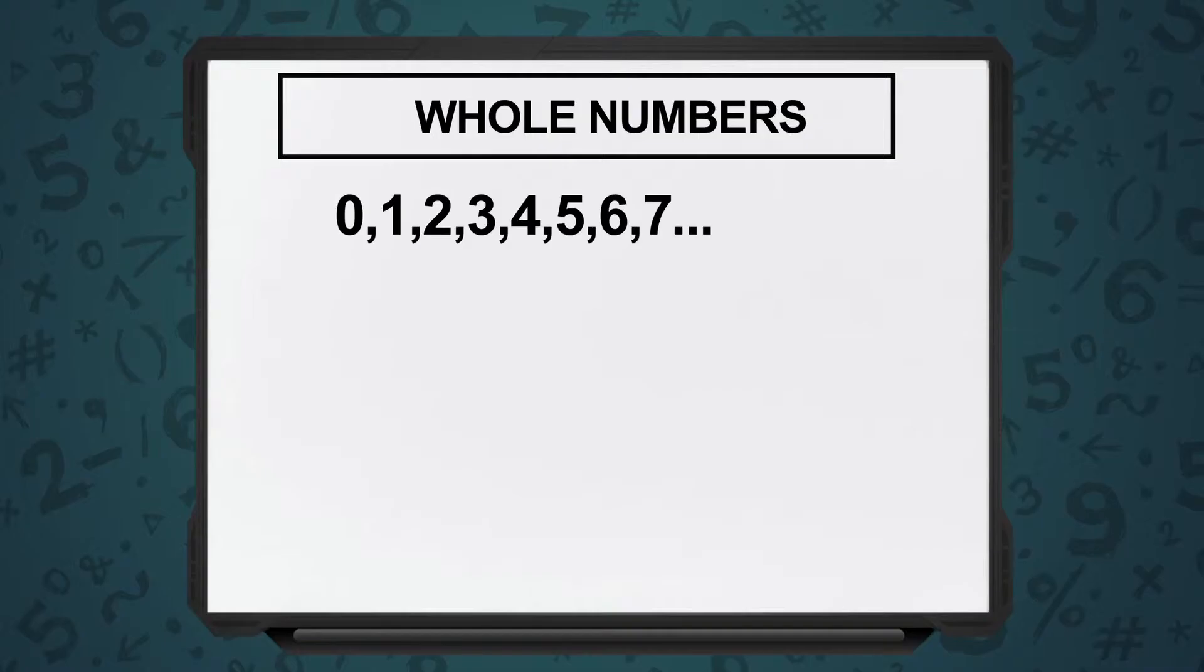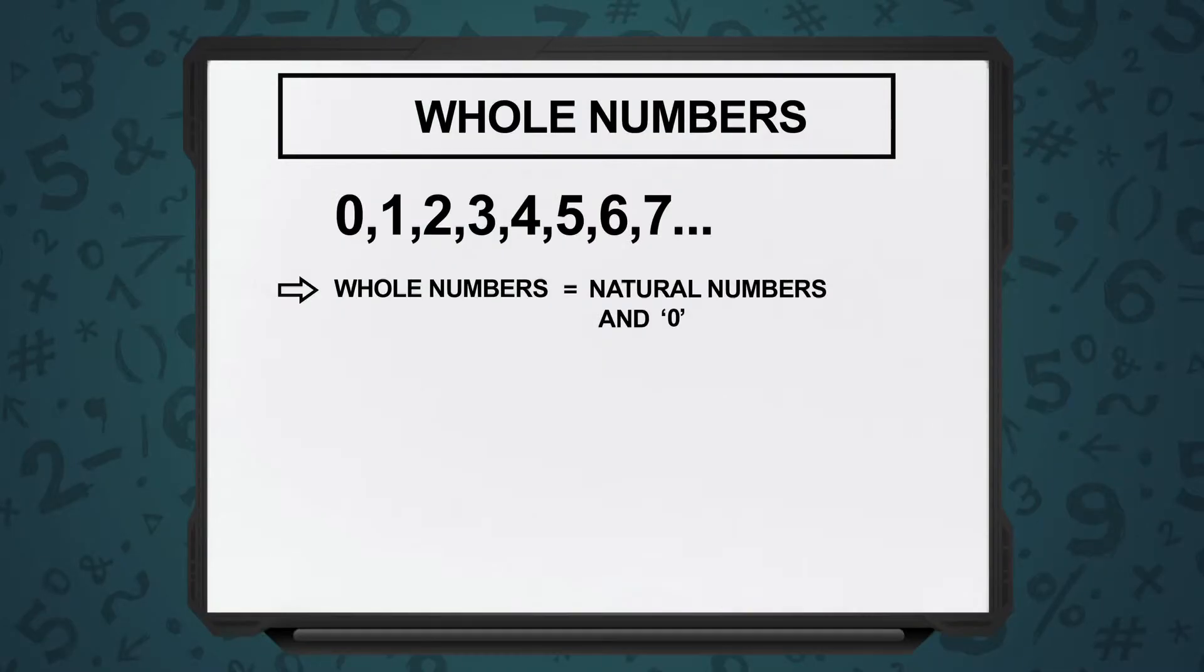Next, we have whole numbers. Again, in whole numbers there are no decimals, there are no negative numbers. So all natural numbers will come into whole numbers as well, with one more addition: zero.